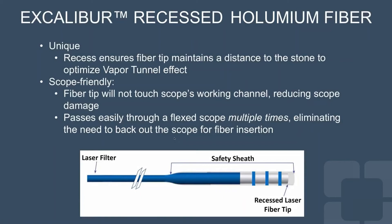To support this, they have developed the Excalibur fiber — a recessed fiber tip optimized for use with the vapor tunnel effect. The laser fiber tip is recessed within a safety sheath, creating the space needed for the vapor tunnel effect to function even when the sheath contacts the stone. Additional advantages include that the fiber tip won't damage the scope's working channel due to no direct contact, and it passes easily through a flexed scope multiple times, eliminating the need to back out the scope for fiber insertion.